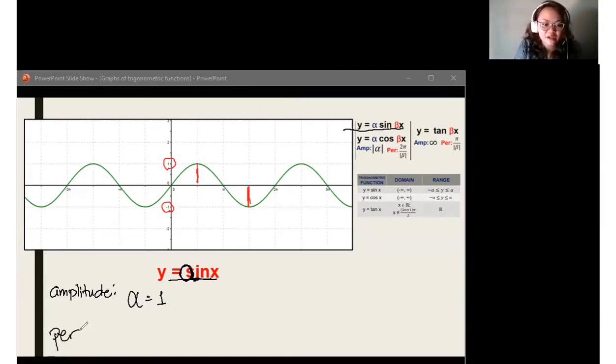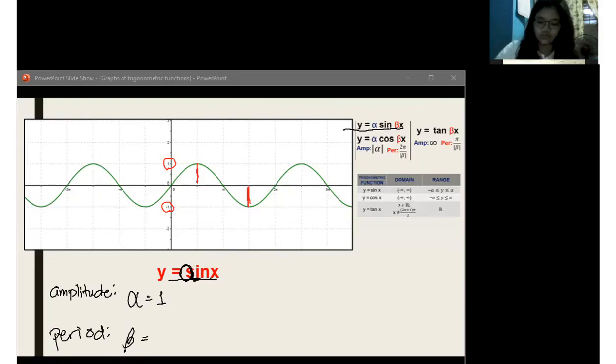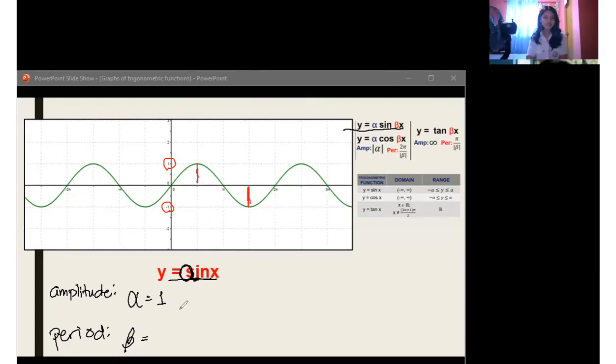Next, let's talk about the period. For the period, we first identify the value for beta. And beta here is yung kasama ni x mo. Hindi yung kaibigan mong ahas. Yung numerical coefficient ng x dito. Okay? Alright. So, ano po ang numerical coefficient na given natin dito? X lang siya. So, ano ang beta natin? 1. Okay. Very good.